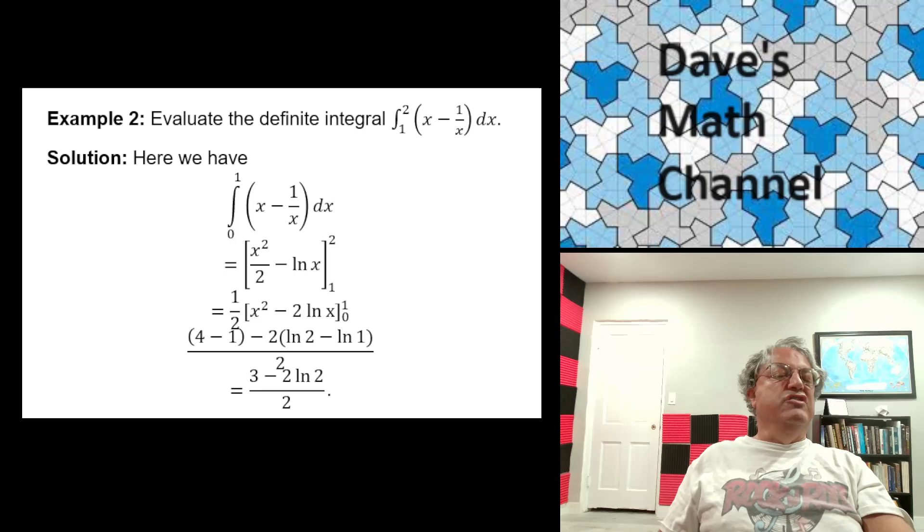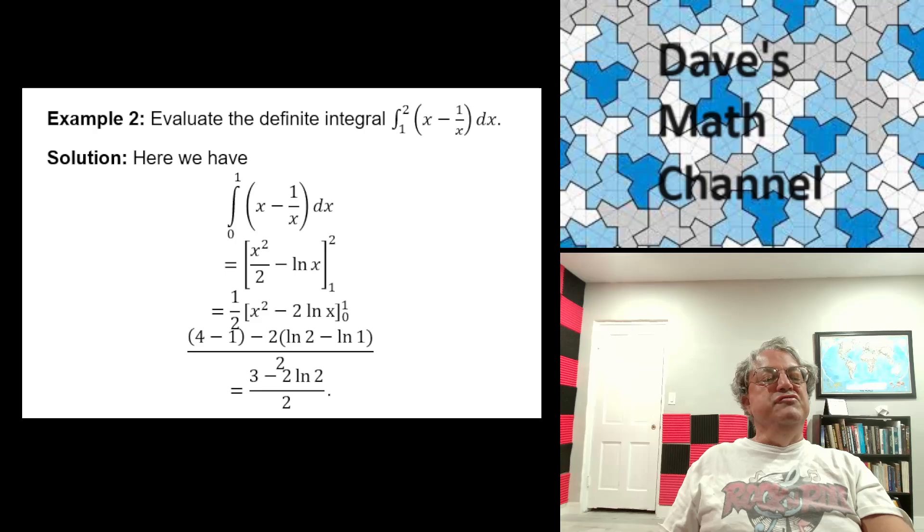Again, simplifying by writing everything over common denominator, we get 1 half times x squared minus 2 ln x, x going from 1 to 2. And when we plug in x equals 2, we get 4 for x squared. I like to group the terms this way. So when you plug in the lower limit 1, you get 1. So you get 4 minus 1. And then for the second term, when you plug in 2, you get 2 log 2. We can factor out 2 for the whole thing. So we get 2 times log 2. When we plug in 1, we get log 1. But log 1 is 0. So when you simplify all this, you get 3 minus 2 log 2 over 2.